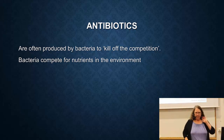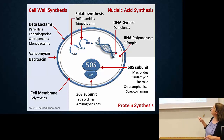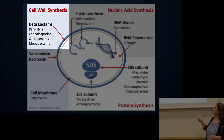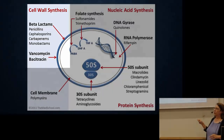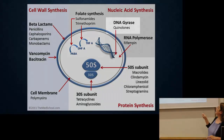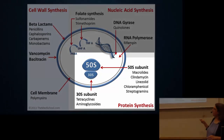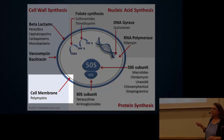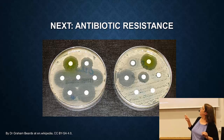What I've presented today and last week is summarized here — a cell indicating all the targets for antibiotics. Last week I talked about beta-lactams, which include penicillin, targeting the cell wall. Vancomycin also affects the cell wall. I mentioned those that affect metabolism, those that affect DNA, those that affect RNA, and all of these affecting the ribosome and protein synthesis, and polymyxins that affect the cell membrane. We'll break now before going on to antibiotic resistance.